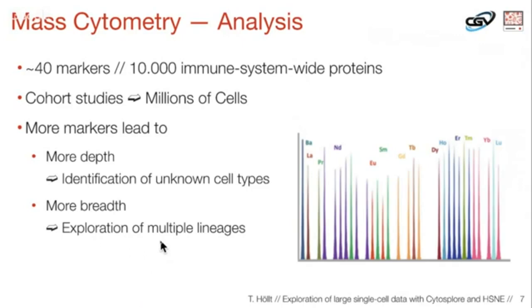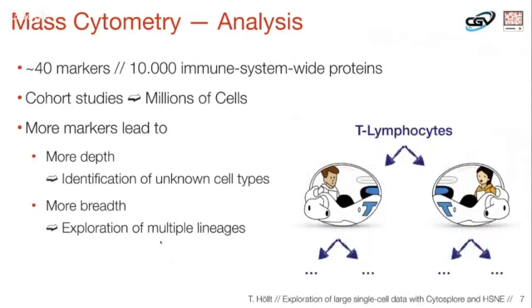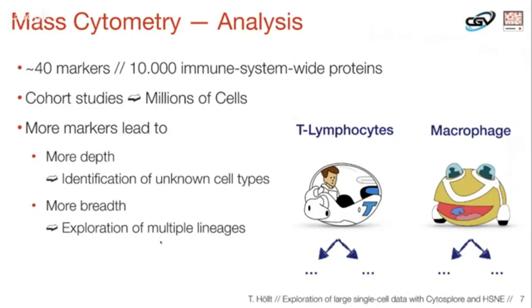Taking a step back to the markers, the increase compared to the clinical standard of flow cytometry gives us two possible paths for exploration. One is we can look into the immune system in more depth — interested in specific cell types like T lymphocytes and use the increased markers to further differentiate within that one cell type. But we can also look at the immune system in more breadth: explore multiple lineages of cells at the same time and get an overview of the whole immune system in one measure, and even look at the interaction of different cell types, which was very rarely done before.